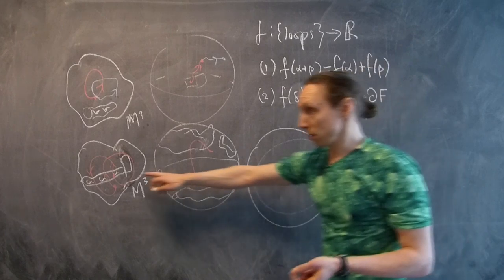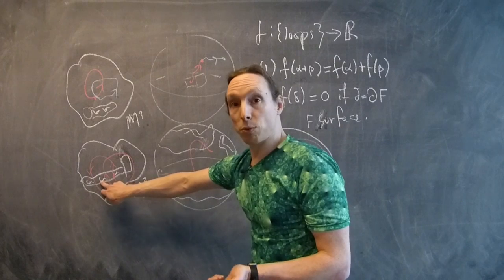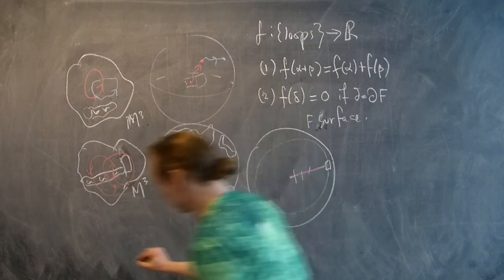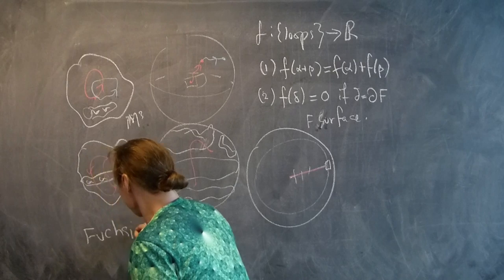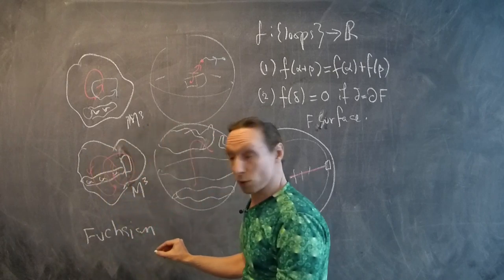The surface that you start with in the 3-manifold can be one of three kinds. It can be a Fuchsian surface. It can be a quasi-Fuchsian surface.